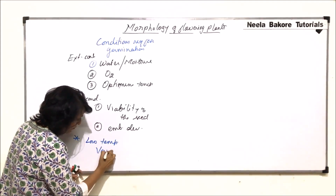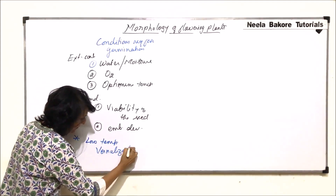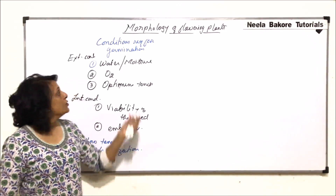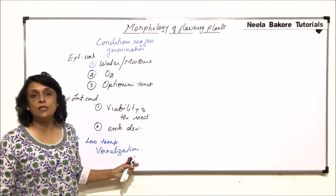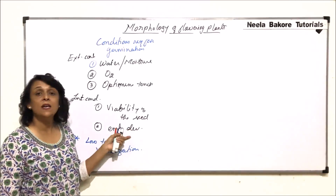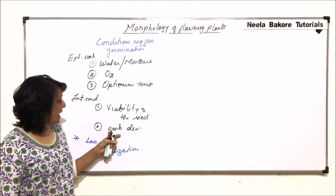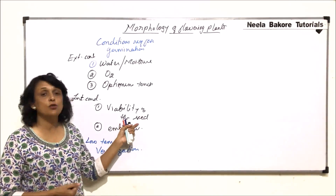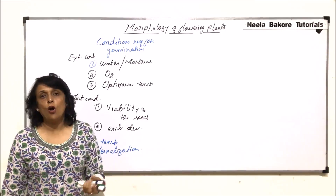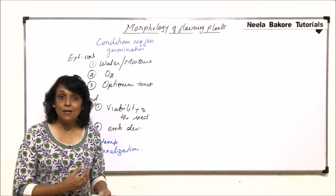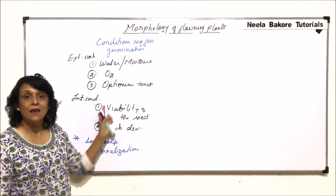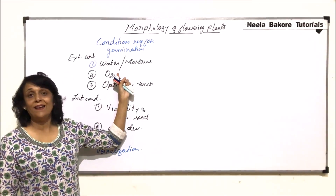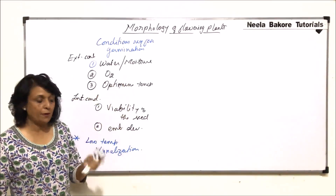The requirement of low temperature for germination is known as vernalization. So these are the basic conditions — some external, some internal. Internal conditions include proper embryonic development, viability of the seed, proper growth hormones, and fewer inhibitors. External conditions are three: moisture, air, and optimum temperature.